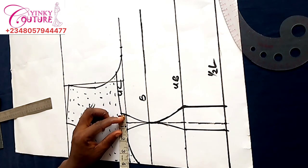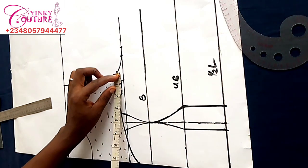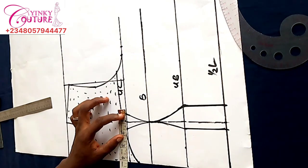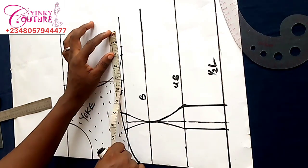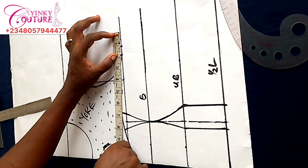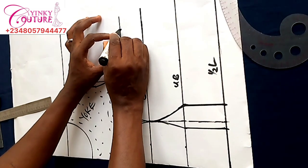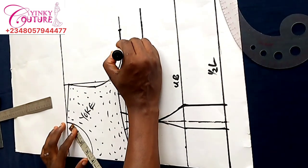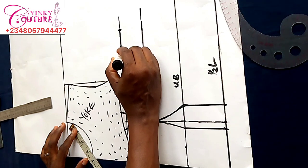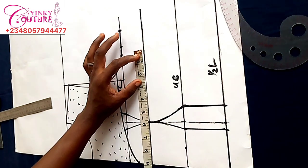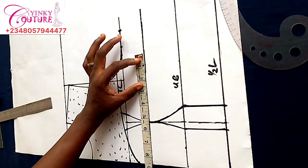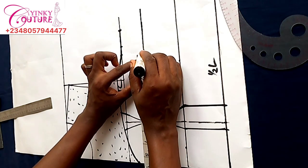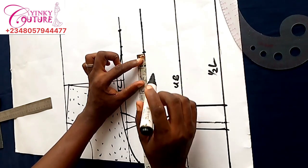On the upper chest, I input the bust circumference divided by four, then add all the dart intake. The dart intake here is one inch — I add it so as to fill up for all the losses of the dart intake. Whenever you take a dart, you're going to add it up when you are putting your measurements. On the bust line there's no dart intake.